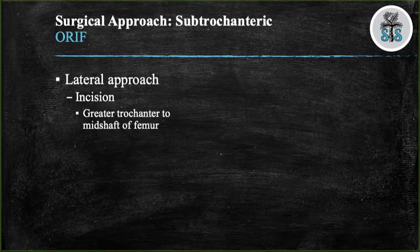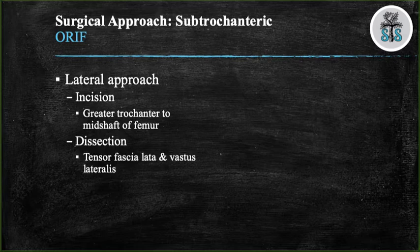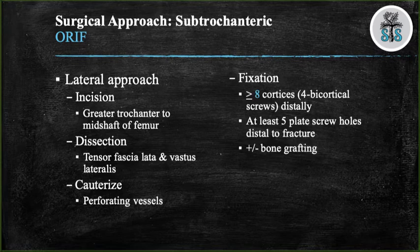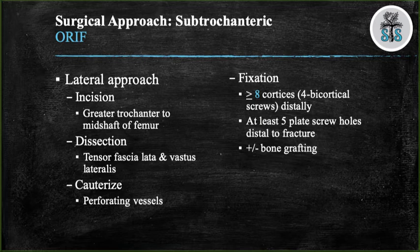When using a plate to treat subtrochanteric fractures, you will use a lateral approach between the greater trochanter and the shaft of the femur, dissecting through the tensor fasciae latae and the vastus lateralis. You will need to cauterize the perforating vessels from the profunda femoris artery. You will want four bicortical screws distal to the fracture, which translates to eight cortices being engaged. When templating your plate, you want at least five plate screw holes distal to the fracture. You can also consider bone grafting.